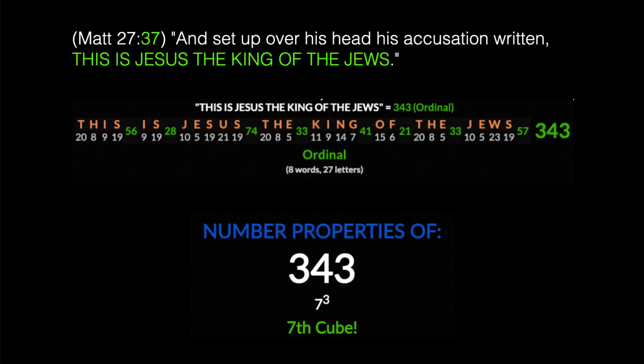Let us examine the inscription on the cross as given in Matthew 27:37: 'And set up over his head his accusation written, This is Jesus the King of the Jews.' The phrase 'This is Jesus the King of the Jews' has a numerical value of 343, which is the seventh cube number — seven times seven times seven. Three and seven are important numbers in the Bible, and when you concatenate them you get 37 — a prime number, sufficiently large to develop a code around.